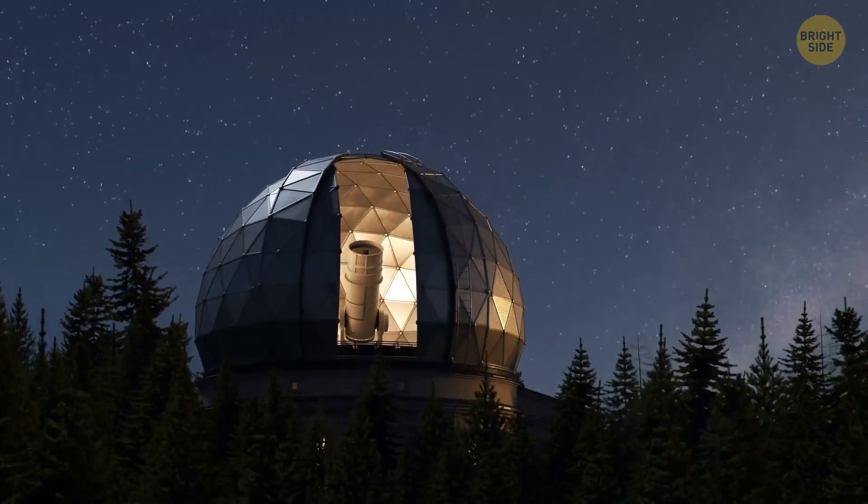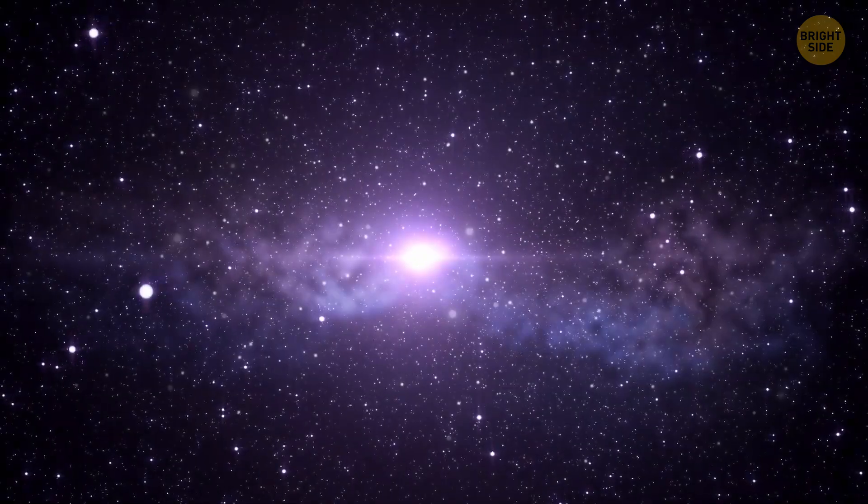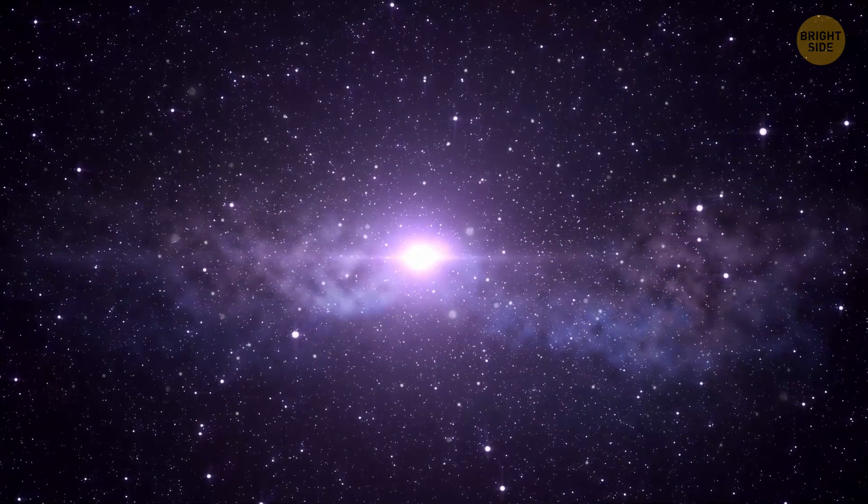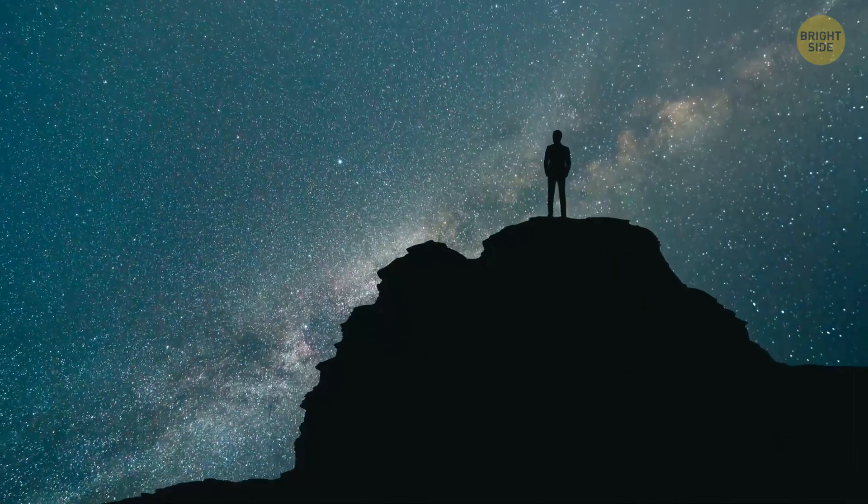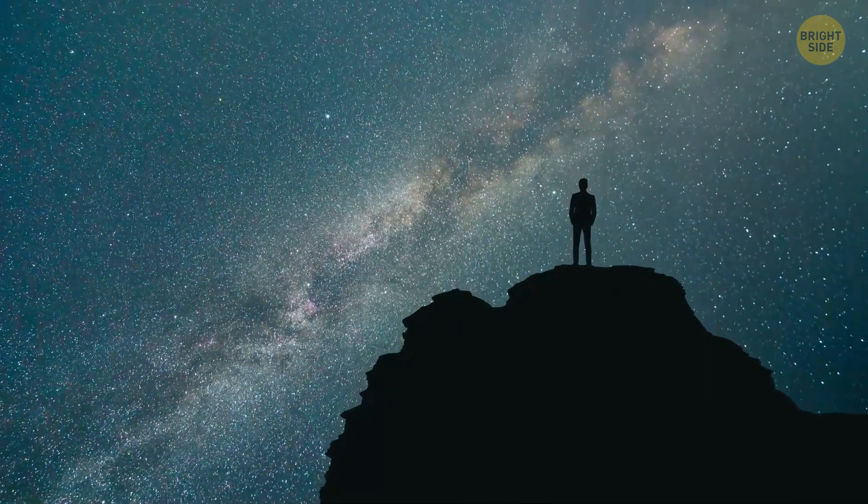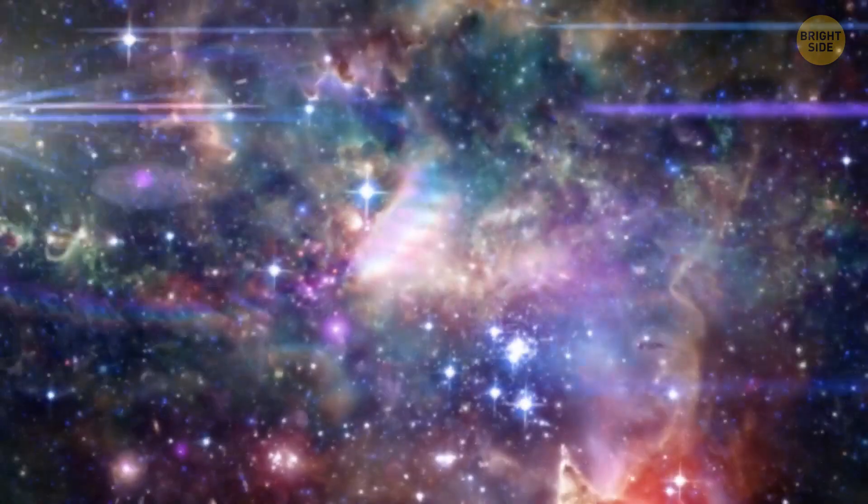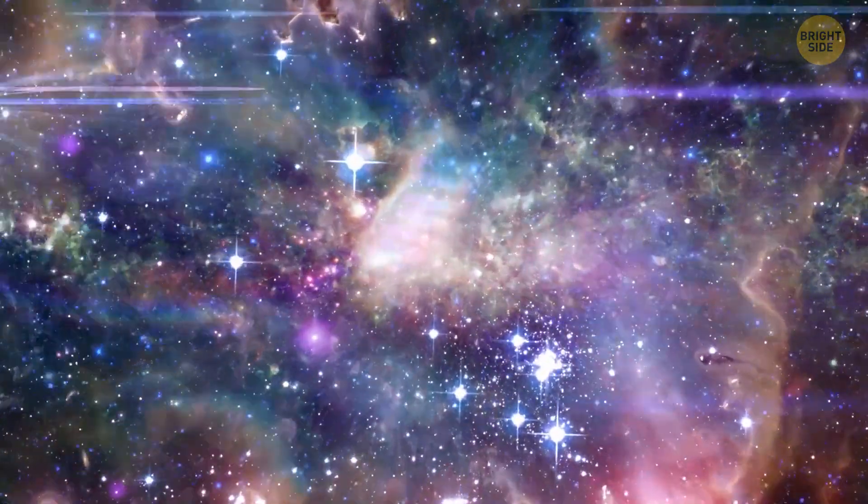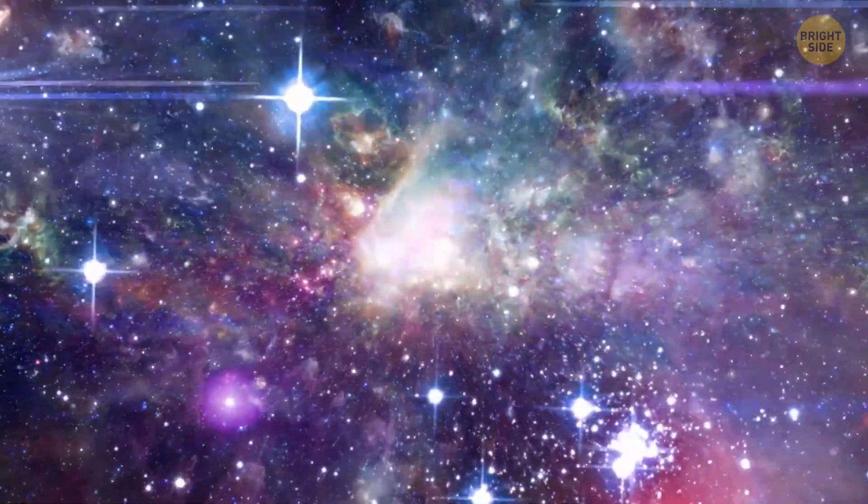So when we look at a galaxy through a telescope, we usually see only the brighter core, not the outer parts. Unfortunately, our eyes just aren't made to see things like the active galactic nucleus. So, these stars are the brightest things we can see. But what a beautiful sight it is!